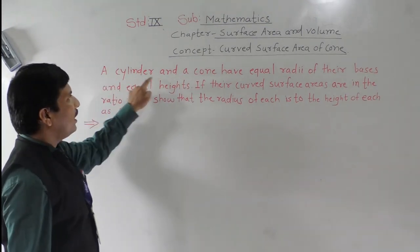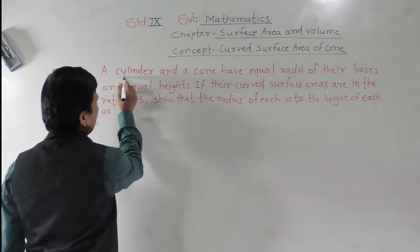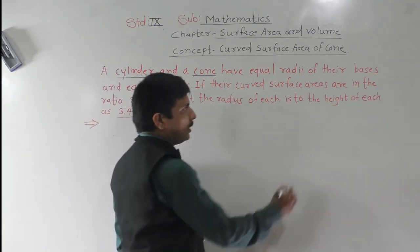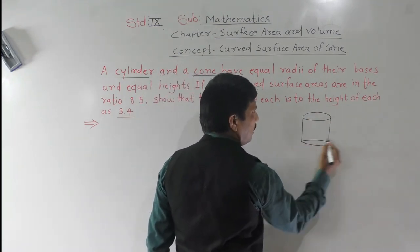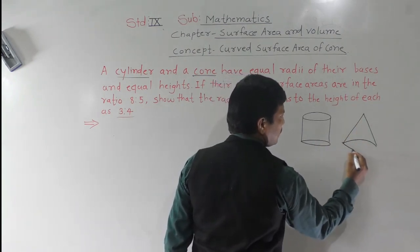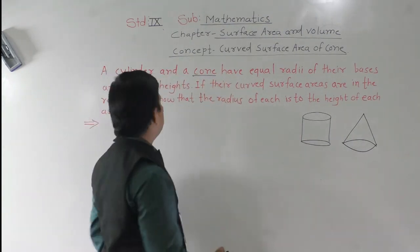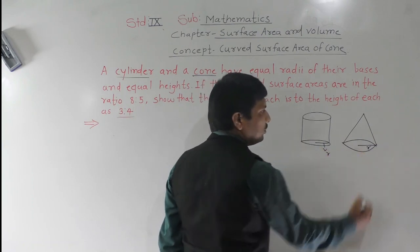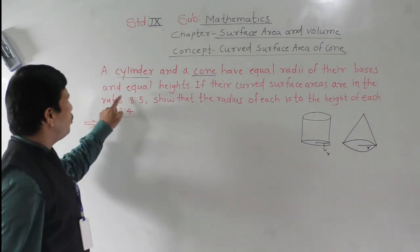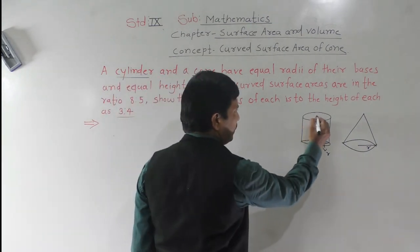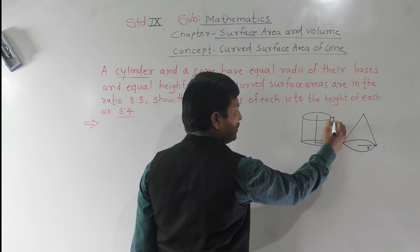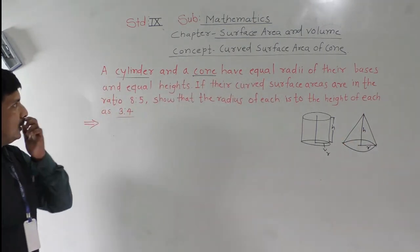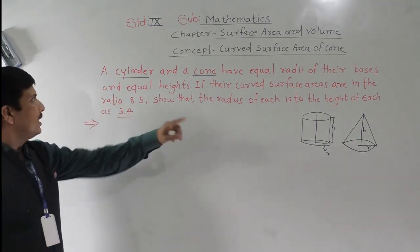Next problem: a cylinder and a cone have equal radii of their bases and equal heights. Their curved surface areas are in the ratio 8 to 5. We need to show that the radius to height ratio is 3 to 4.